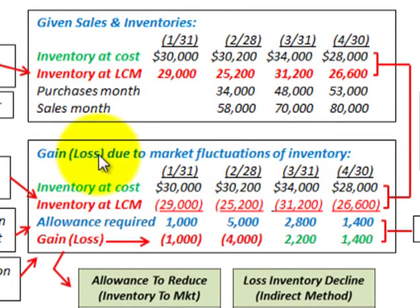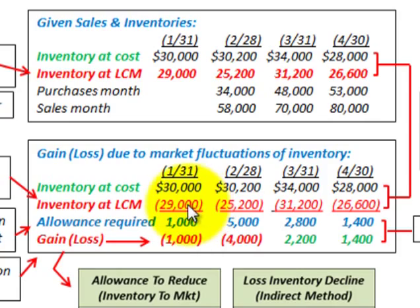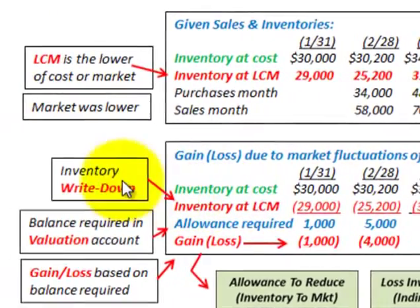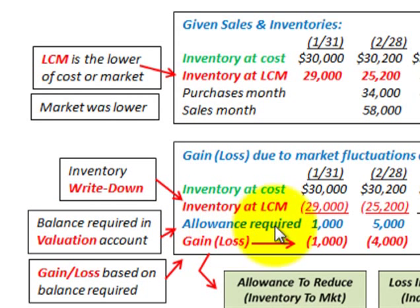We need to determine the gain or loss due to market fluctuations in our inventory. We had our inventory recorded at LCM and at cost. To determine any gain or loss, we start with inventory at cost and subtract the inventory at lower cost or market value. The LCM amount is lower than cost in all cases, so we have to write down the inventory. This requires an allowance account — that's what we're going to concentrate on.